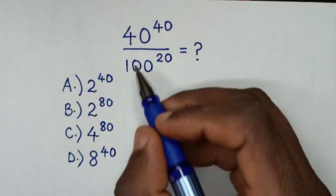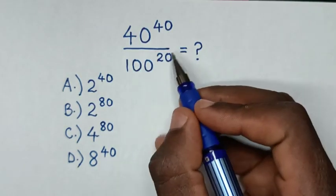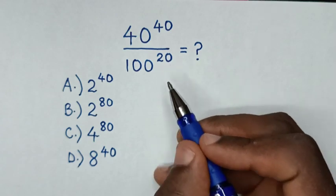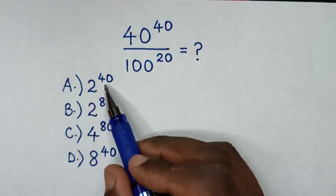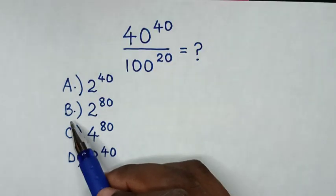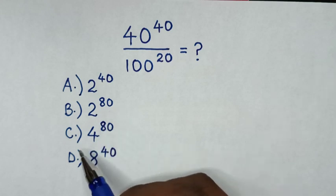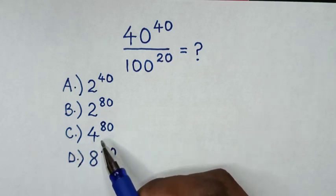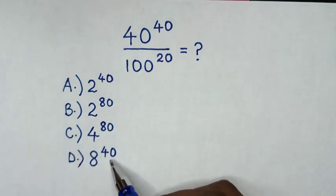Hello. How to solve 40 power of 40 over 100 power of 20, by selecting between the answers: A, 2 power of 40; B, 2 power of 80; C, 4 power of 80; D, 8 power of 40.